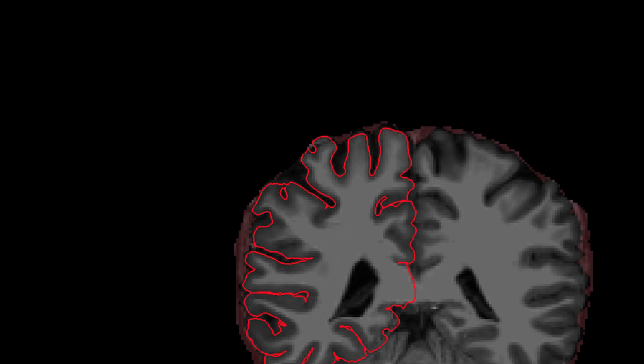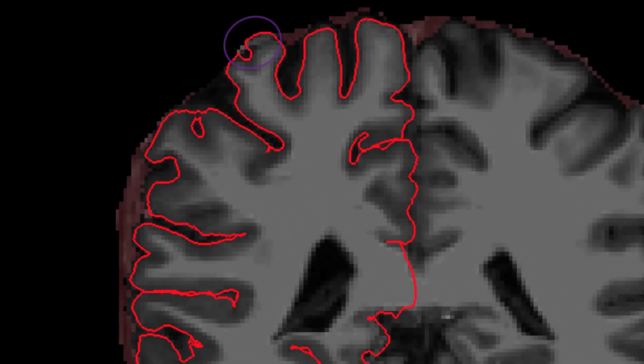In this case, however, we can see that although some dura was removed, it wasn't in the areas that were affecting the peel surface estimation. You could try more aggressive skull stripping parameters, but this may cause more problems than it solves.